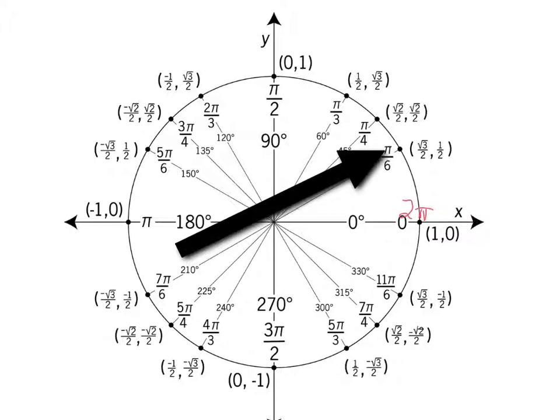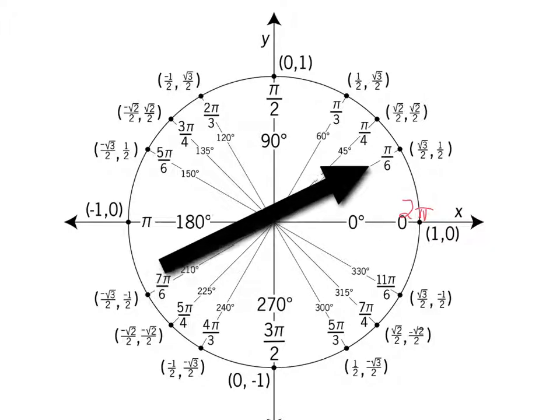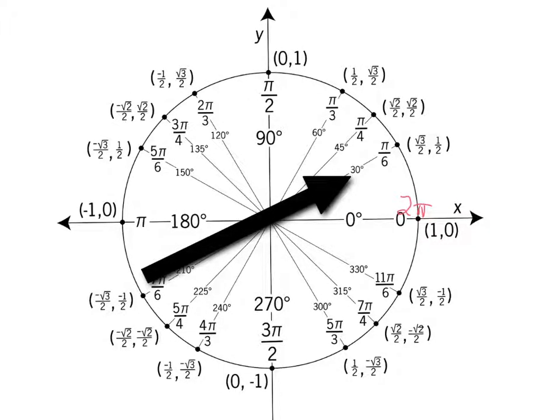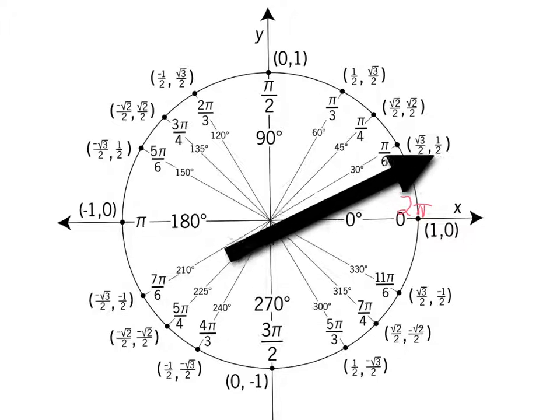So radians and degrees. Radians is the circle in terms of pi. Degrees are like what you're familiar with. So one thing you have to learn is how to go between radians and degrees. But right now I want to talk about these right here.